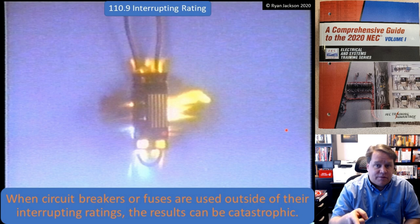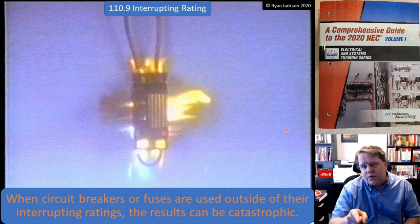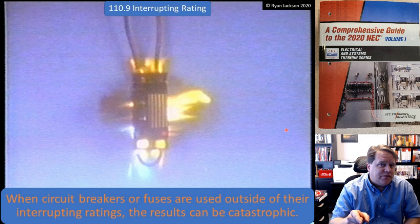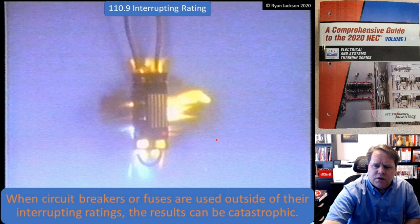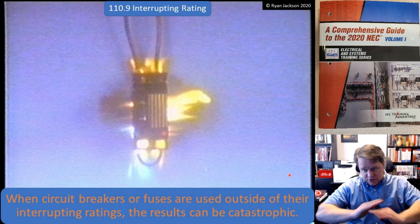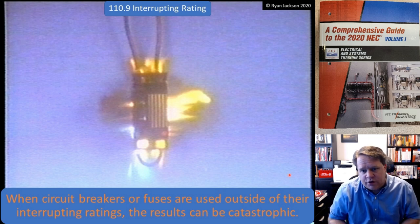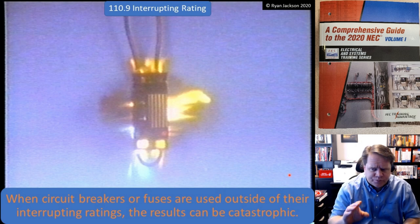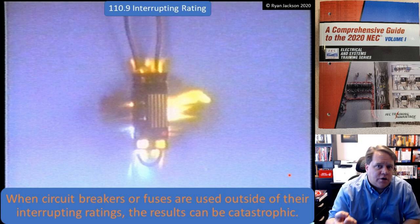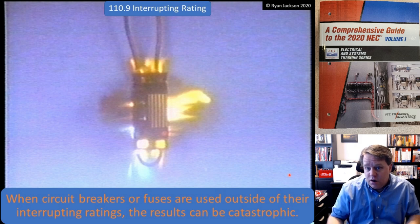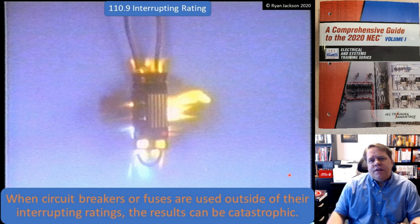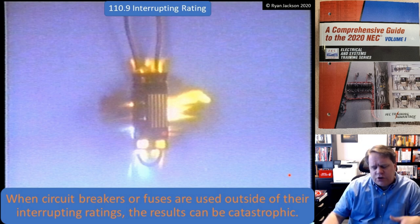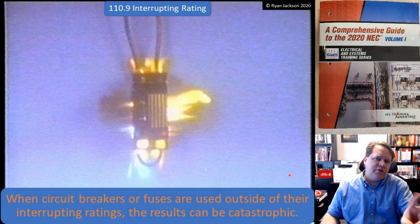This is a circuit breaker rated 14,000 amps being subjected to 50,000 amps. They've jumpered the load side of the breaker line to line - a direct 480-volt short circuit. That's rated 14,000 amps with 50,000 amps across it. That's a gross misapplication and we've got fire and everything else shooting out of the circuit breaker. But if you really think about it - do you check the interrupting ratings when you're replacing circuit breakers?